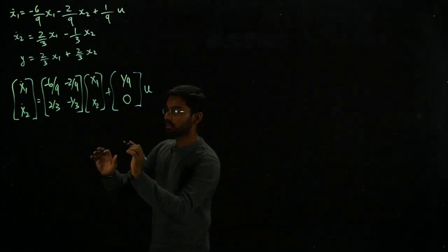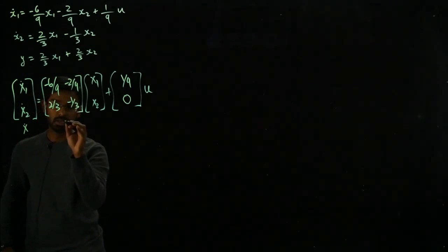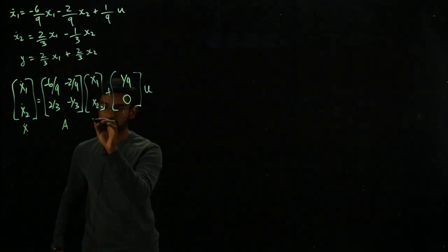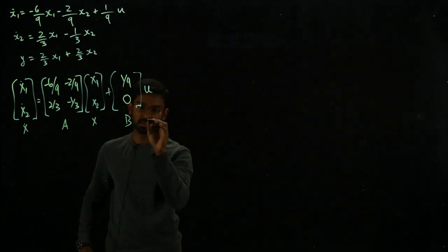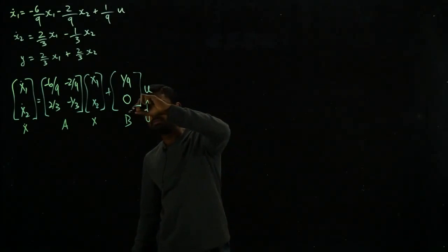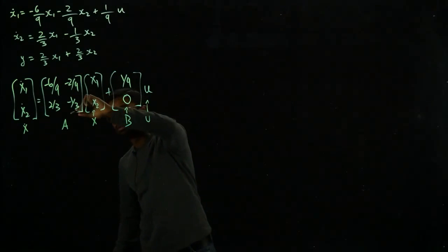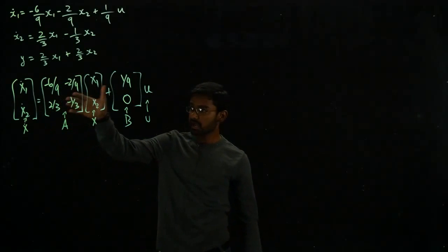This looks like the standard form. This is your x dot vector, this is your A matrix, this is your x vector, this is your B matrix and this is just u, your input. So this is the generic state space equation.